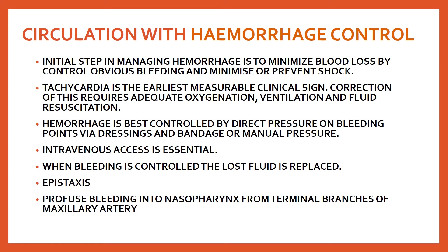C is for circulation with hemorrhage control. The initial step in managing hemorrhage is to minimize blood loss by controlling obvious bleeding and preventing shock. Tachycardia is the earliest measurable clinical sign. In early stages, the circulatory response to blood loss is progressive vasoconstriction of the cutaneous, visceral, and muscle circulation to preserve blood flow to the kidney, heart, and brain. Correction requires adequate oxygenation, ventilation, and fluid resuscitation.